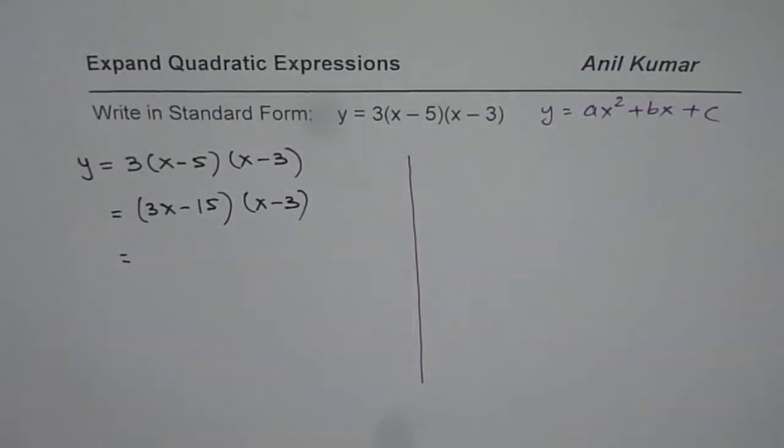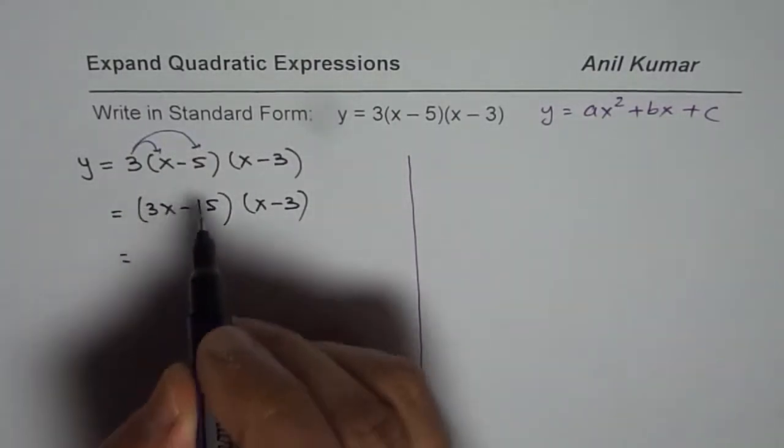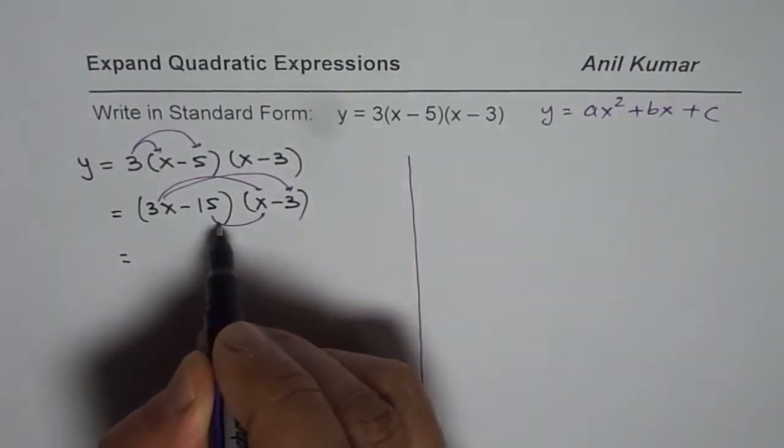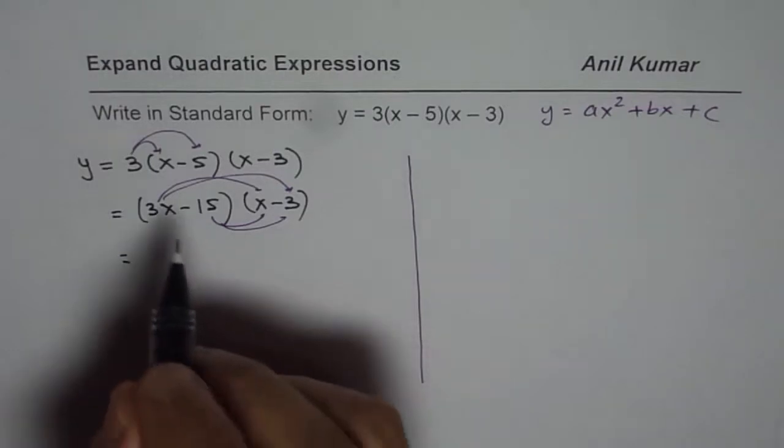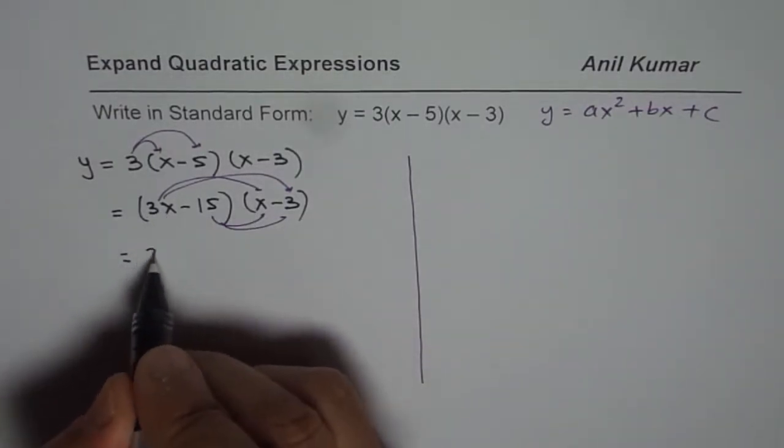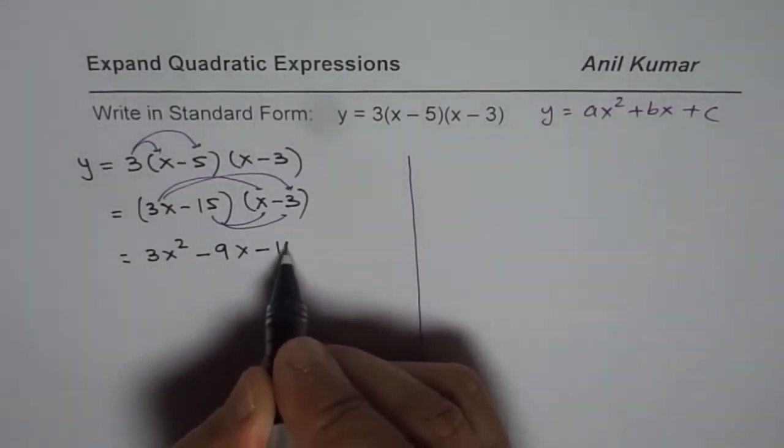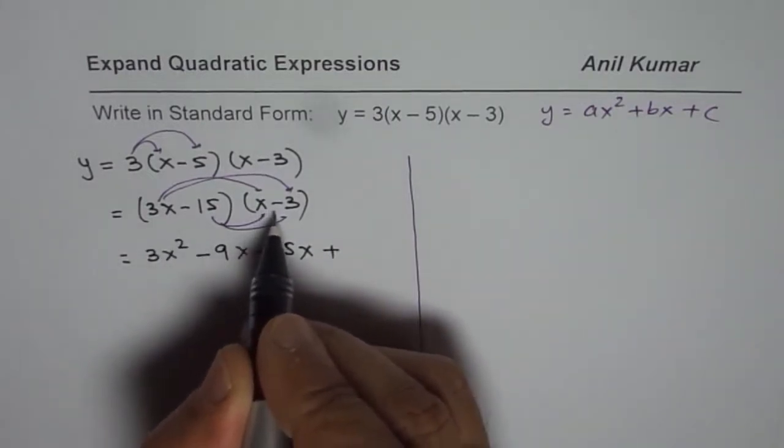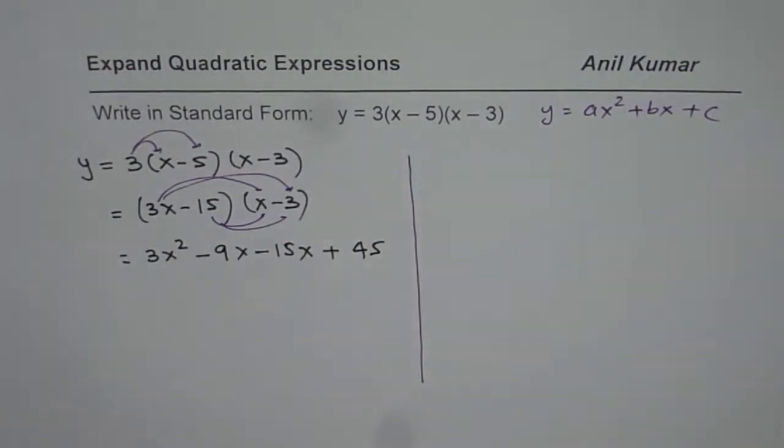Now we will apply the distributed property once again. So first time we multiplied both these terms by 3 and now we will multiply like this. So we will again get 4 terms. So 3x times x is 3x square. 3x times minus 3 is minus 9x. Now we will multiply by minus 15 giving us minus 15x. Minus minus becomes positive. 3 times 15 is 45. You can use the calculator at times.